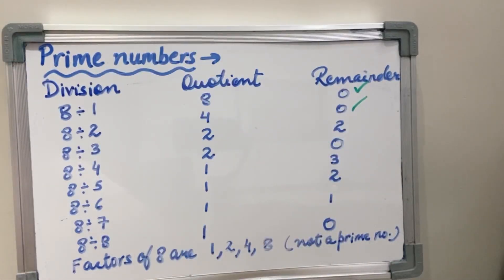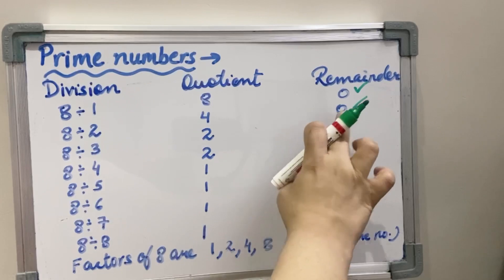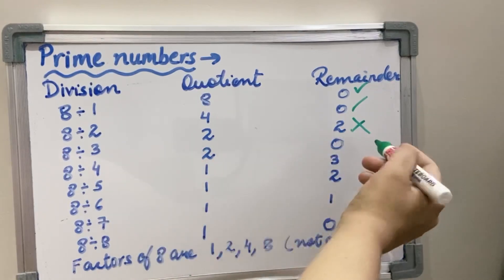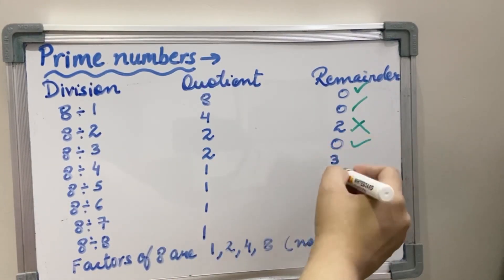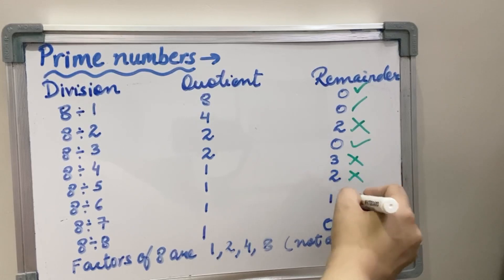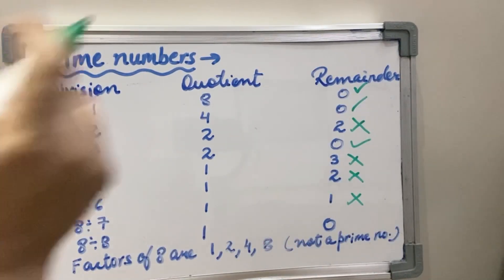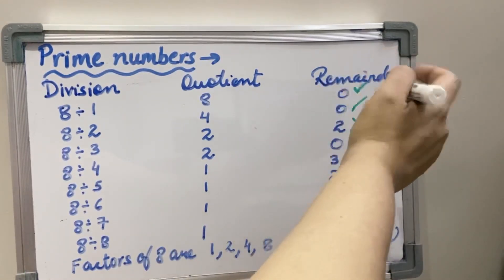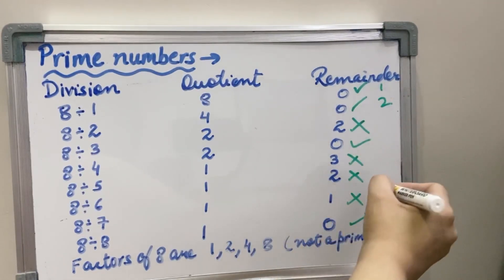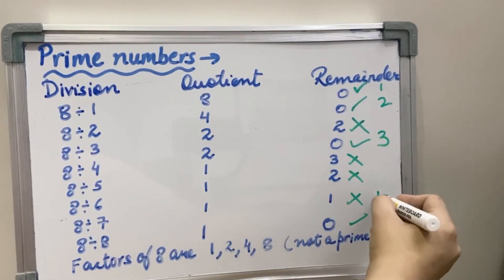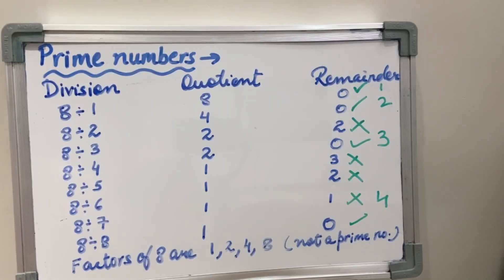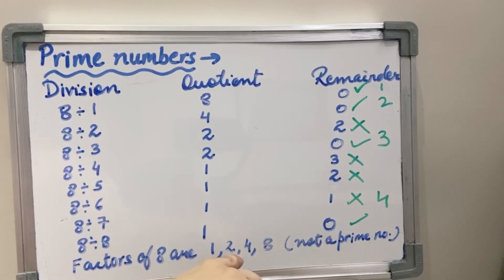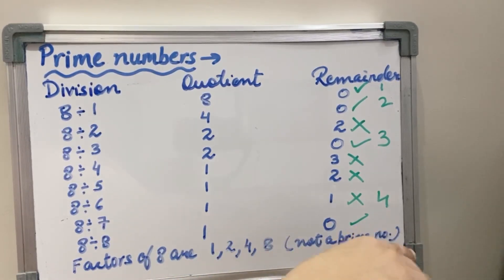With 3, I am getting quotient 2 and remainder 2 — that means it is not a factor. With 4, I am getting quotient 2 and remainder 0 — that means it is a factor. In the next 3 cases I am getting a remainder, so they are not factors. When I divided 8 by 8, I got remainder 0 — that is a factor. So you can see there are 4 factors: 1, 2, 4, and 8. There are more than 2 factors, so it is not a prime number. Factors of 8 are 1, 2, 4 and 8, and it is not a prime number — it is a composite number.